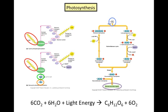Photosynthesis occurs in the chloroplasts of plants and in the cell membranes of prokaryotes, and consists of two types of reactions: the light reactions and the dark reactions.